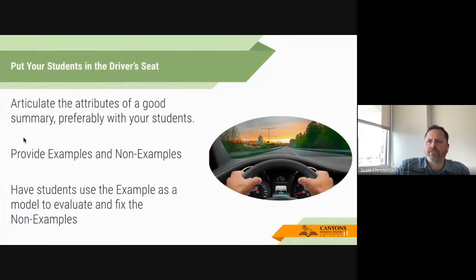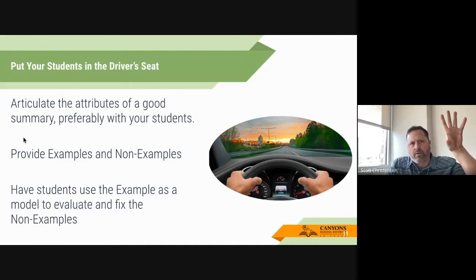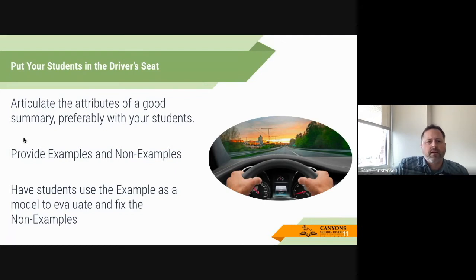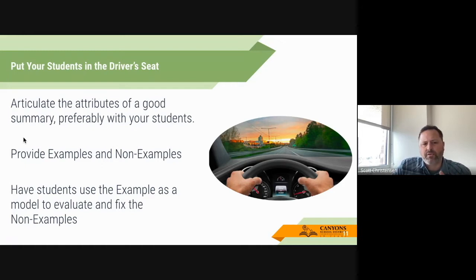For the first tip — put your students in the driver's seat — this is really about articulating and building with your students what are the attributes of a good summary. What does it take? Brainstorming that with your students to create a rubric or checklist for what would be a good summary. On the notes page there's a table where on the left side I put some attributes, and on the right side it's empty for you to add your own. Another thing we need to do with our students is provide examples and non-examples — that goes for just about anything we do. We want to put them in a position where they take those non-examples and fix them, creating a place where our students can play at low stakes, and they can use those as models for their own writing.